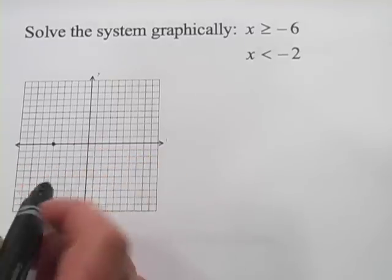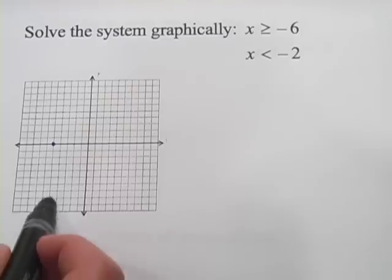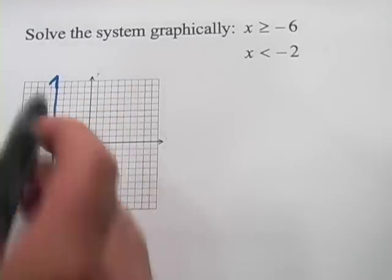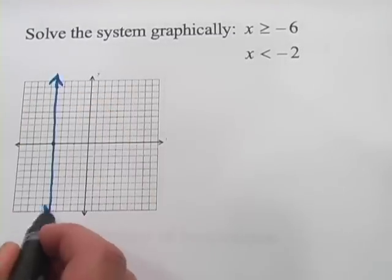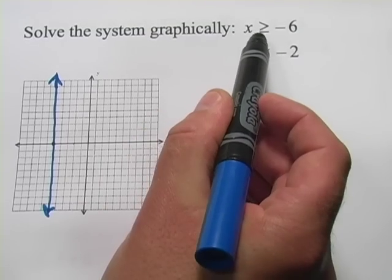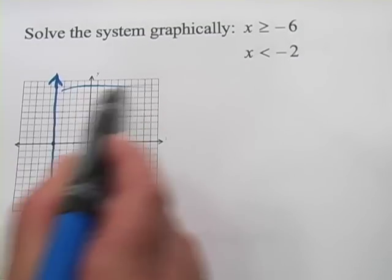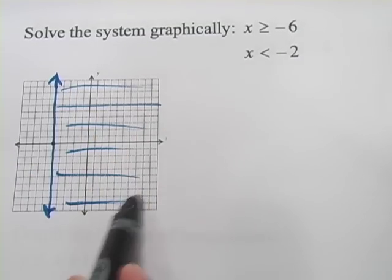Where is x negative 6? 2, 4, 6, right here. But x is negative 6 all along this vertical line. So that's the line x equals negative 6. Where x is greater than or equal to negative 6 is everywhere to the right of that.